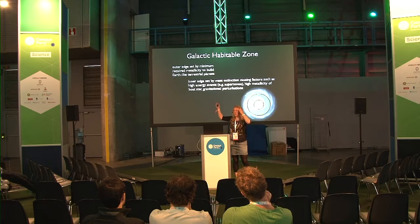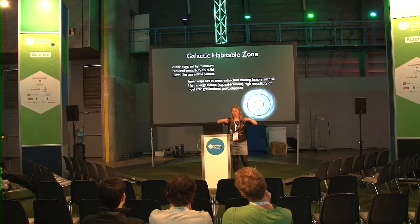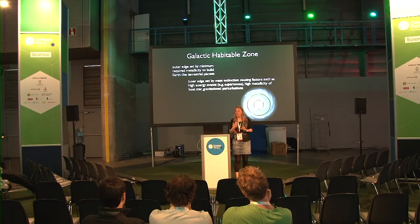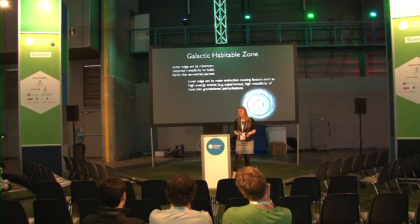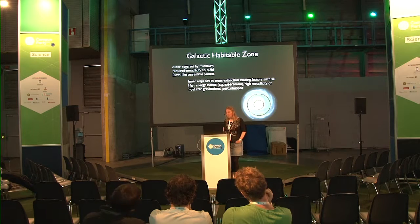If we have a supernova a few stars away, eventually that cloud of erupting material will come our way and start interacting with our solar system. In our case, it means we get more cometary impacts on the Earth, which is not very good for the habitability of the Earth.